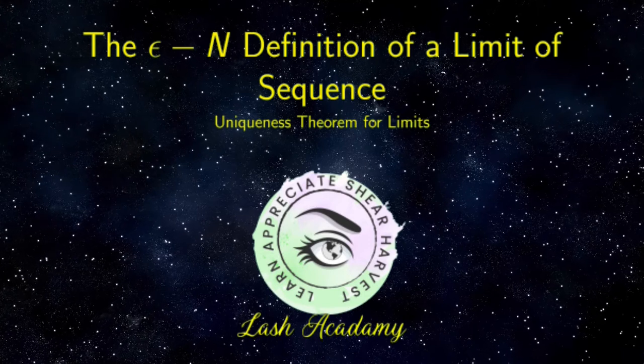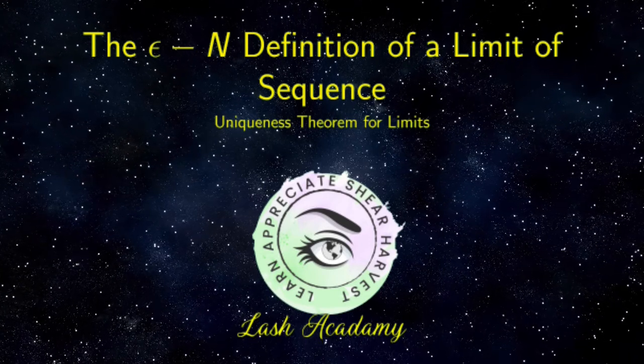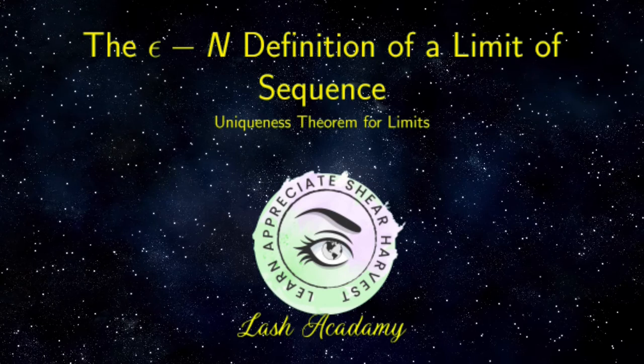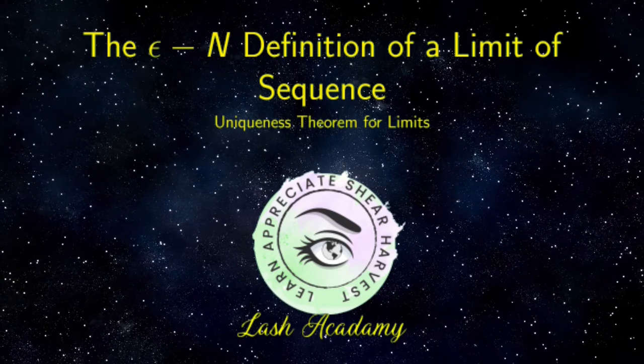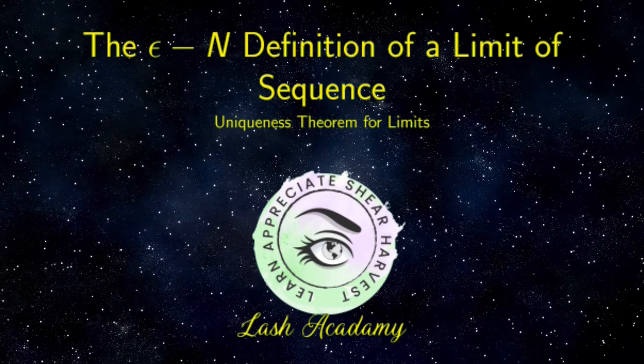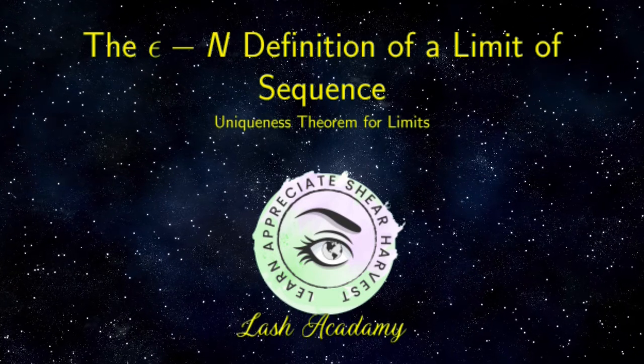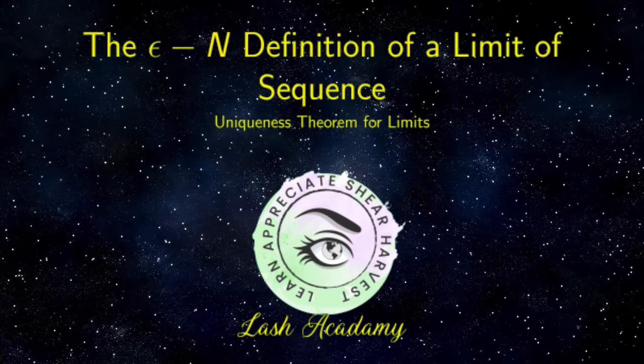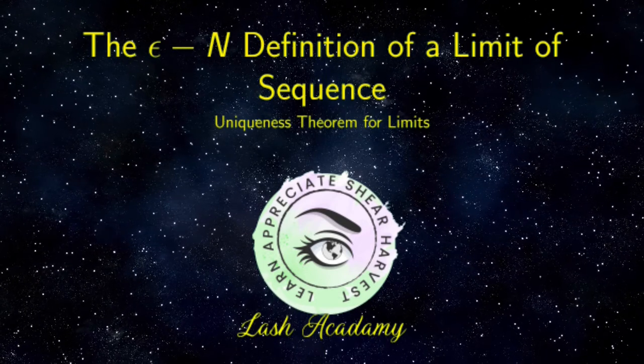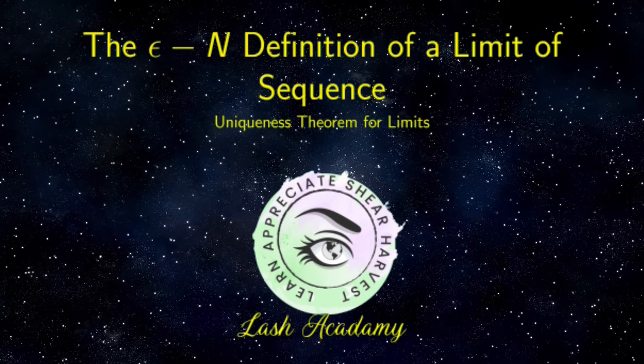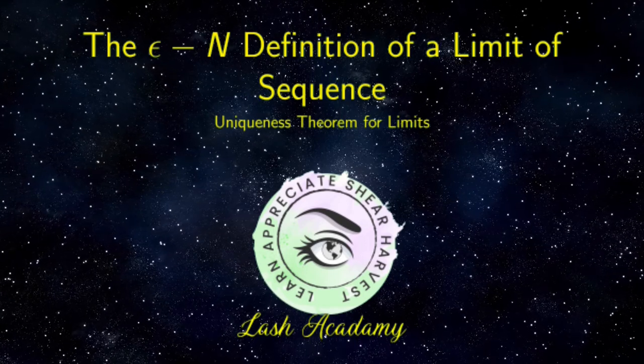The uniqueness theorem for limits states that a sequence a_n has at most one limit. Let's start by pointing out some technical details. In general, a uniqueness theorem asserts the uniqueness of an object satisfying certain conditions, or the equivalence of all things satisfying the said conditions.